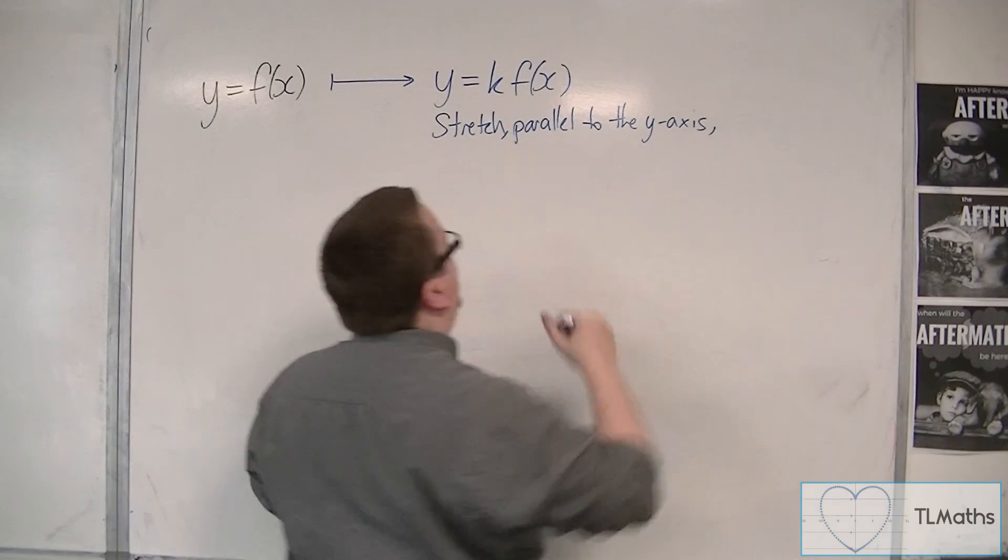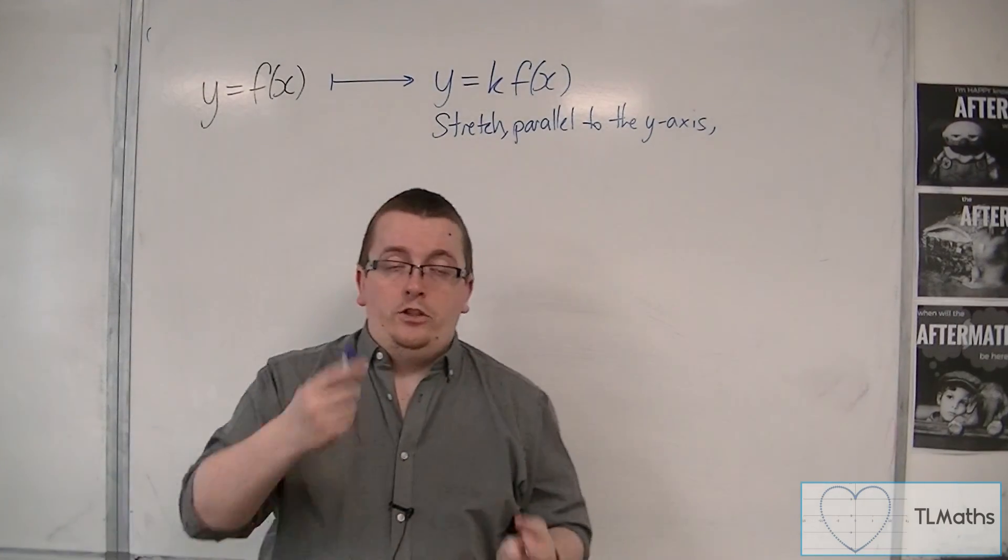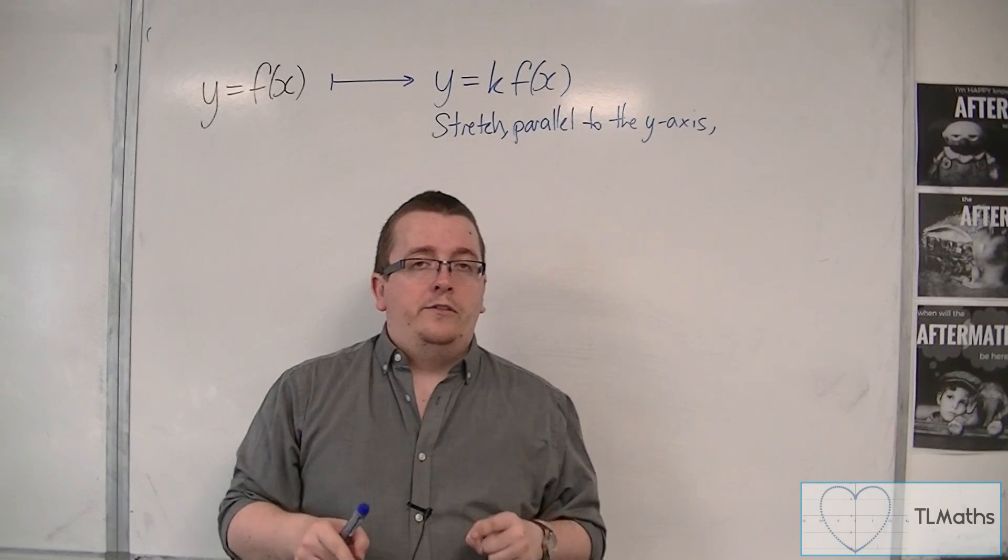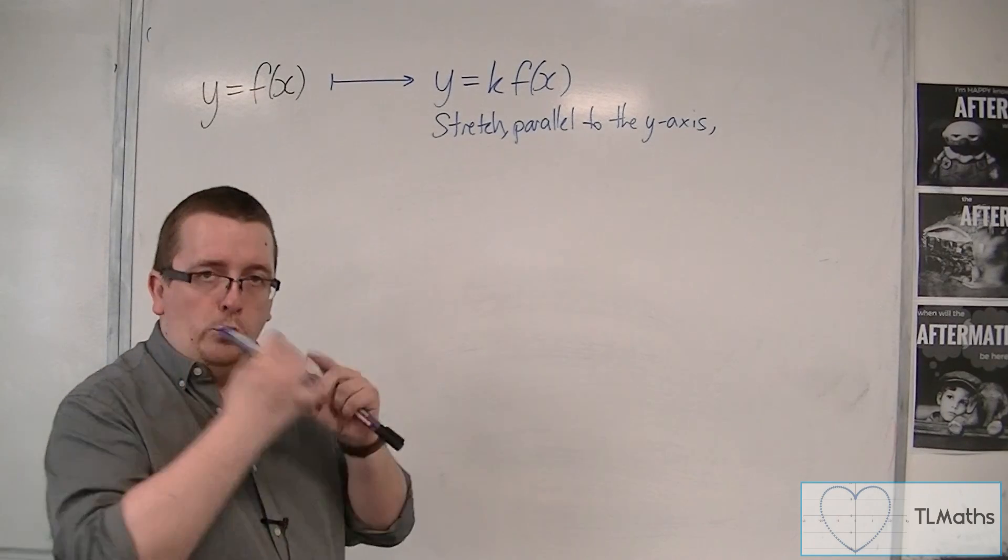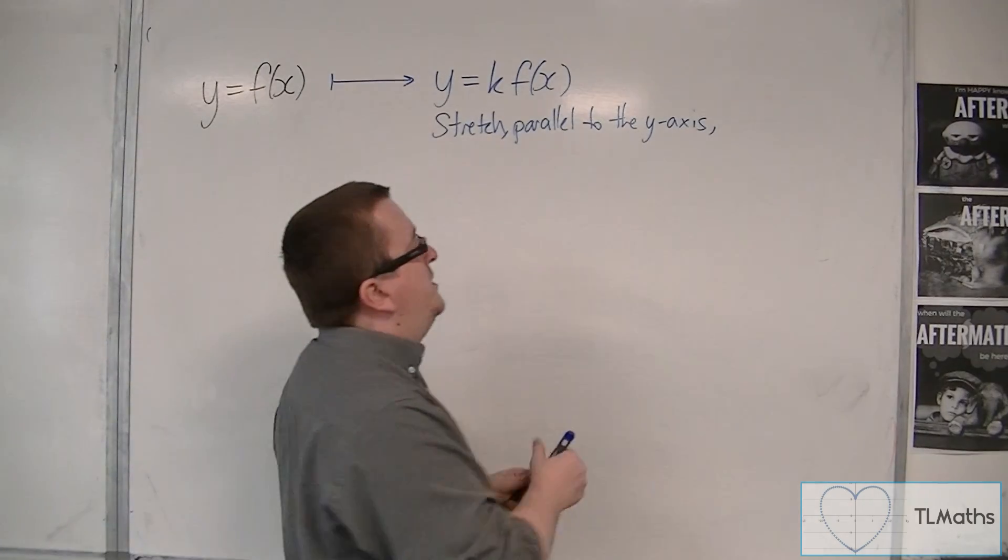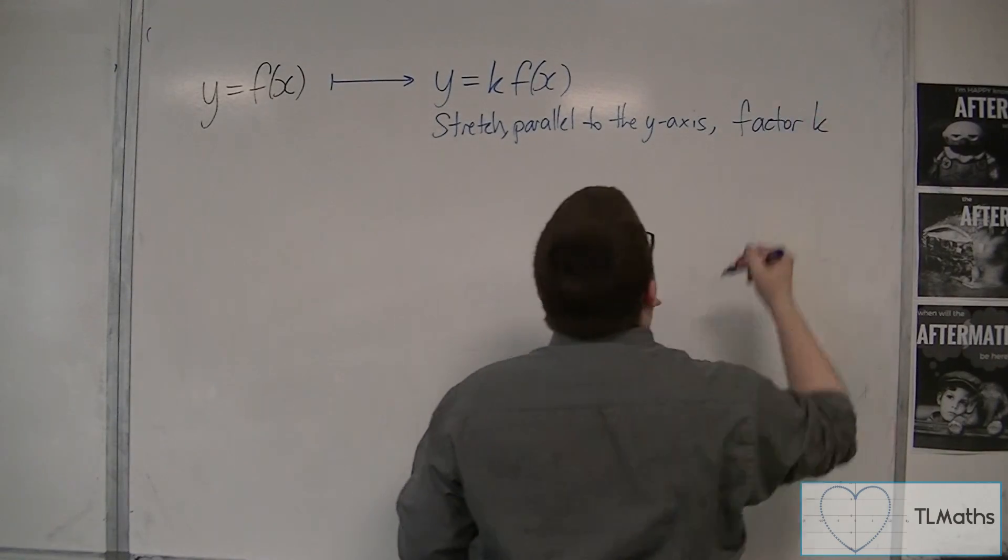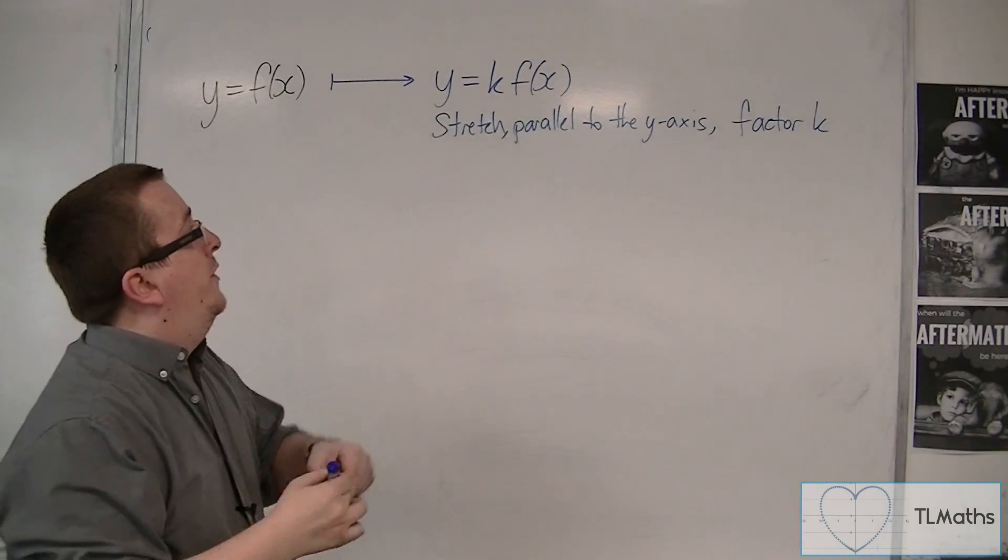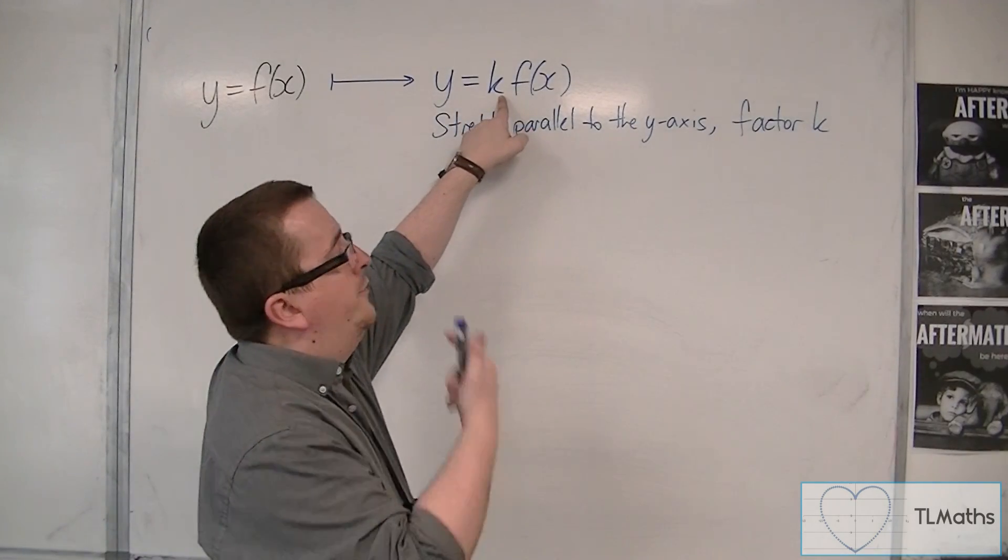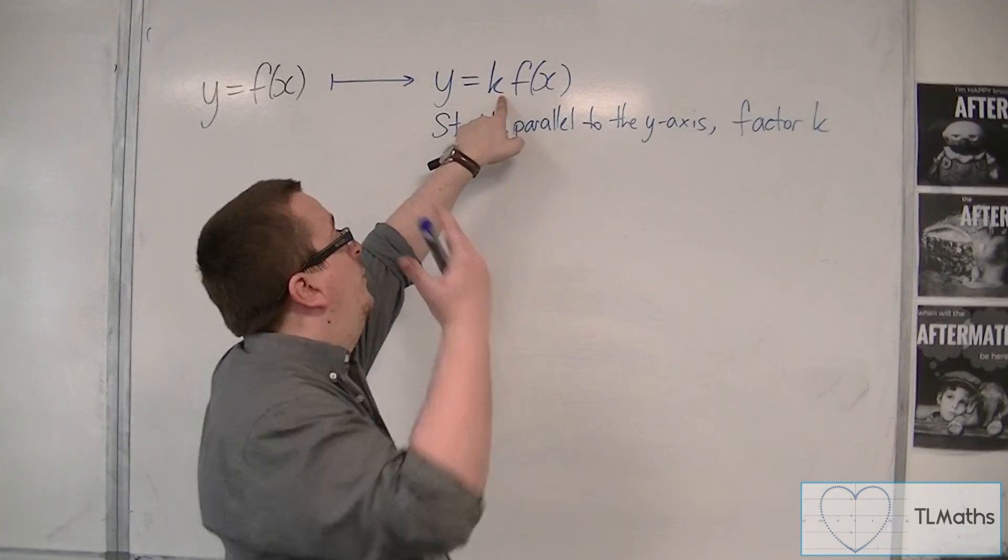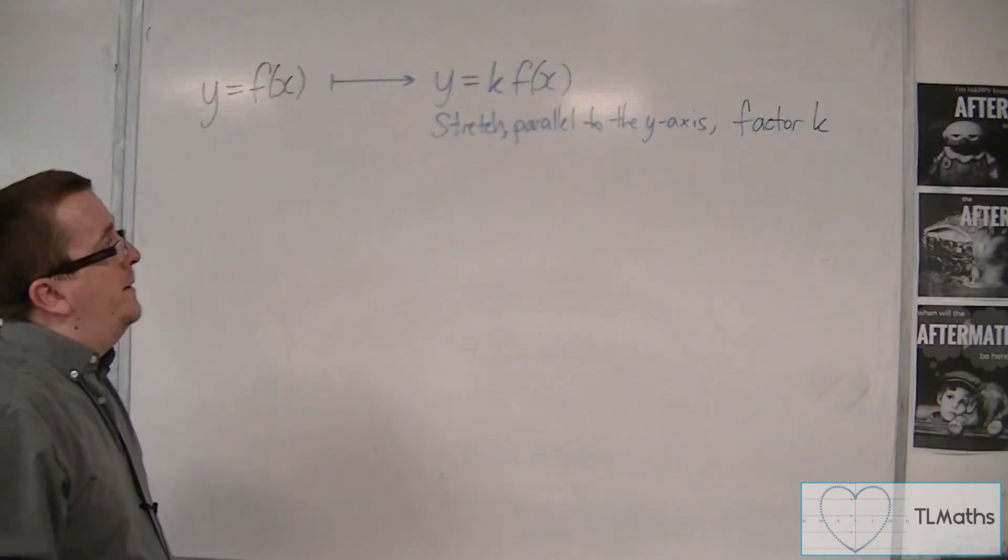And the number that we tried was number 2, and what we found was that all of the y-coordinates of the curve doubled. And so the factor was 2, because all the y-coordinates were being multiplied by 2. So in this case, it would be factor k. So if this was a 3, then the factor would be 3. If this was 10, the factor would be 10. If this was a half, the factor would be a half, and that's how we describe it.